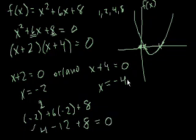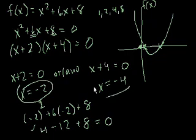And if you did the same thing with -4, you'd also see that that works. And you might be saying, wow, this is interesting. This is an equation that has two solutions. Well, if you think about it, it makes sense, because the graph of f(x) is intersecting the x-axis in two different places.